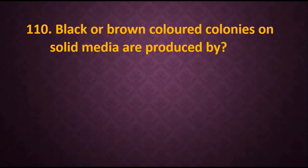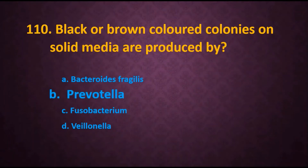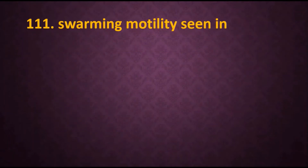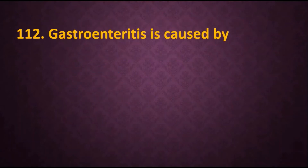Question 110: Black or brown colored colonies on solid media are produced by — options are: A) Bacteroides fragilis, B) Prevotella, C) Fusobacterium, D) Veillonella. The answer is Prevotella. Question 111: Swarming motility is seen in — options are: A) Vibrio cholerae, B) Clostridium, C) Proteus, D) Treponema pallidum. Swarming motility is shown by Proteus, whereas darting motility is shown by Vibrio cholerae.